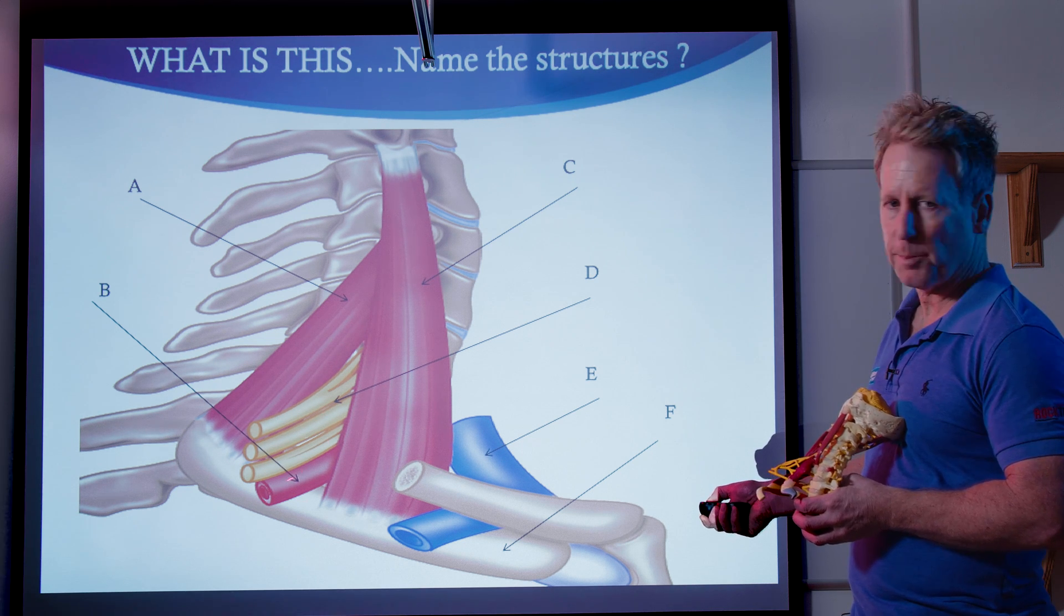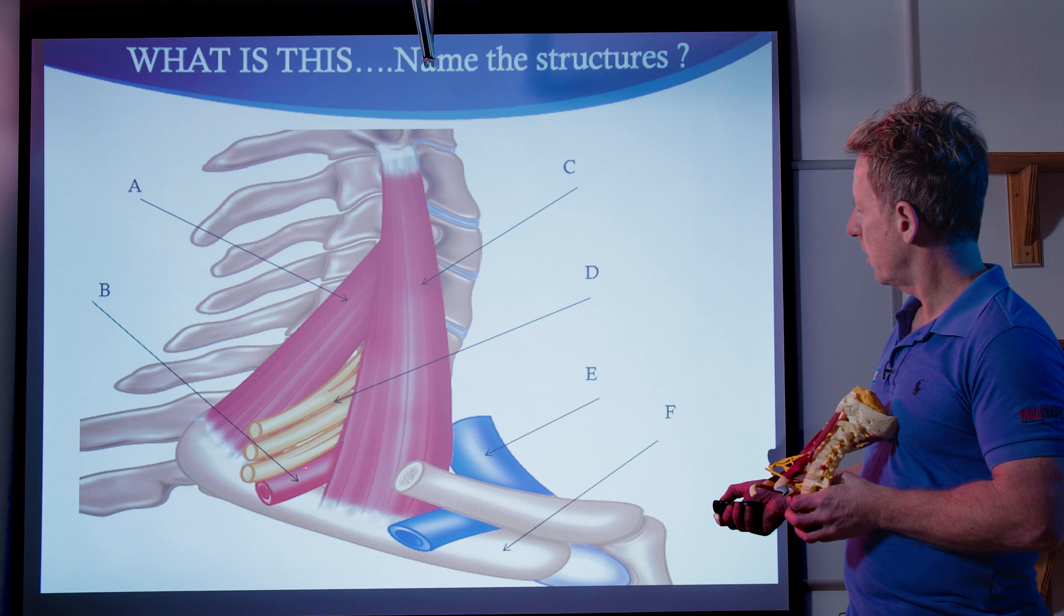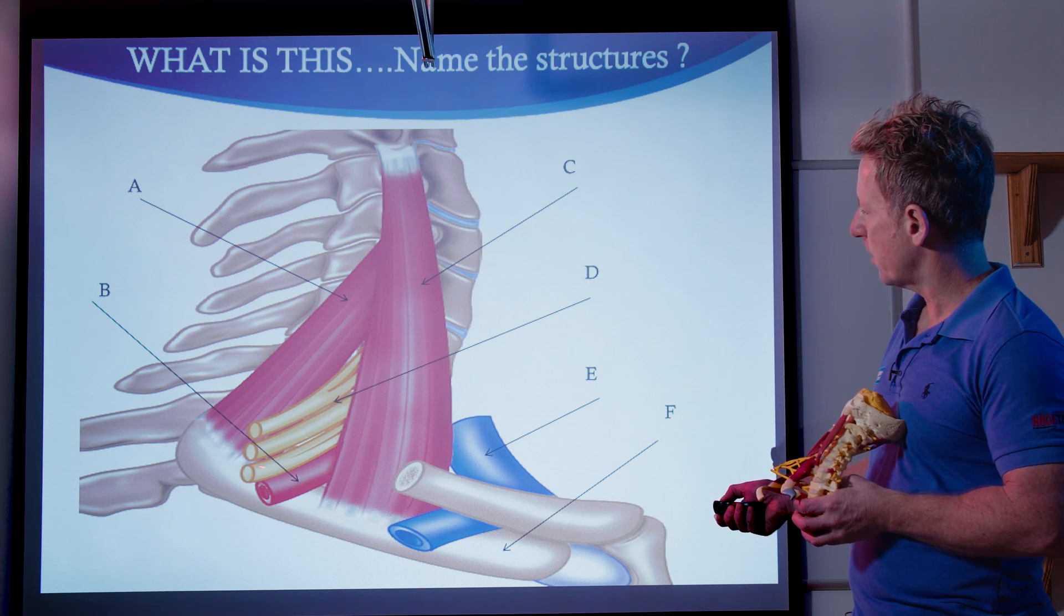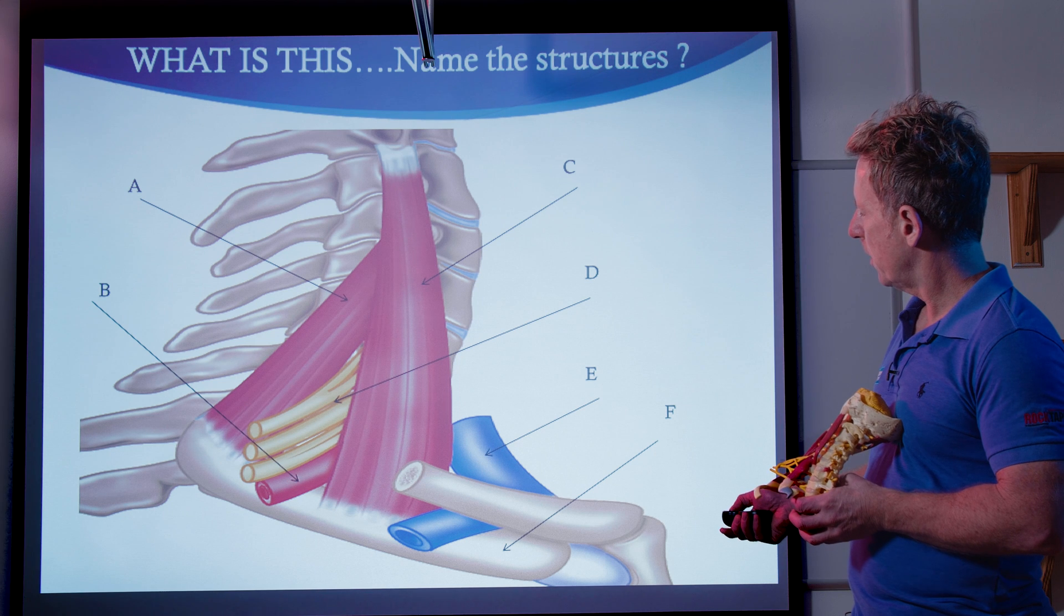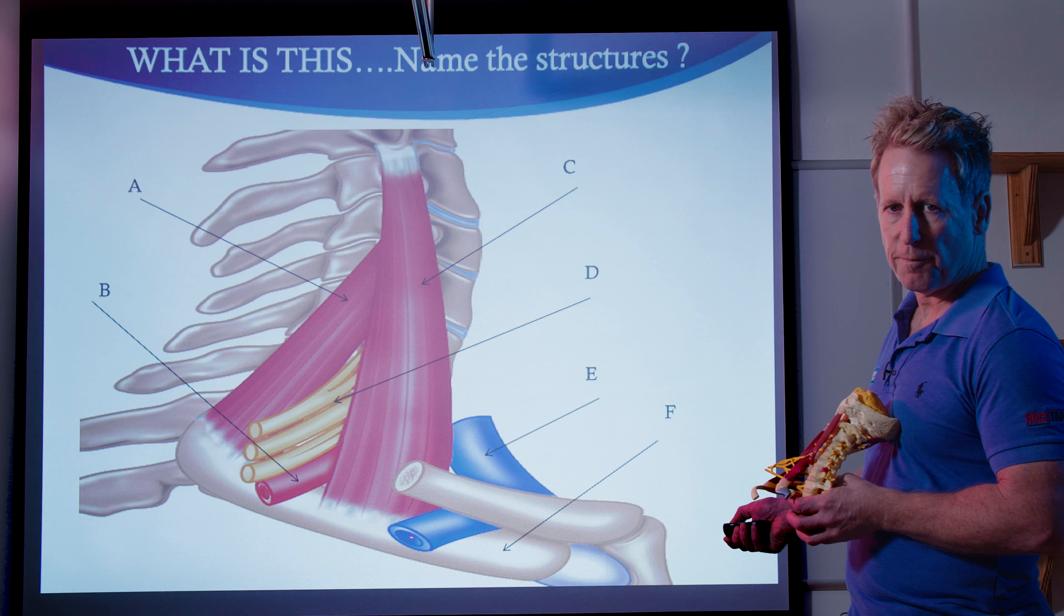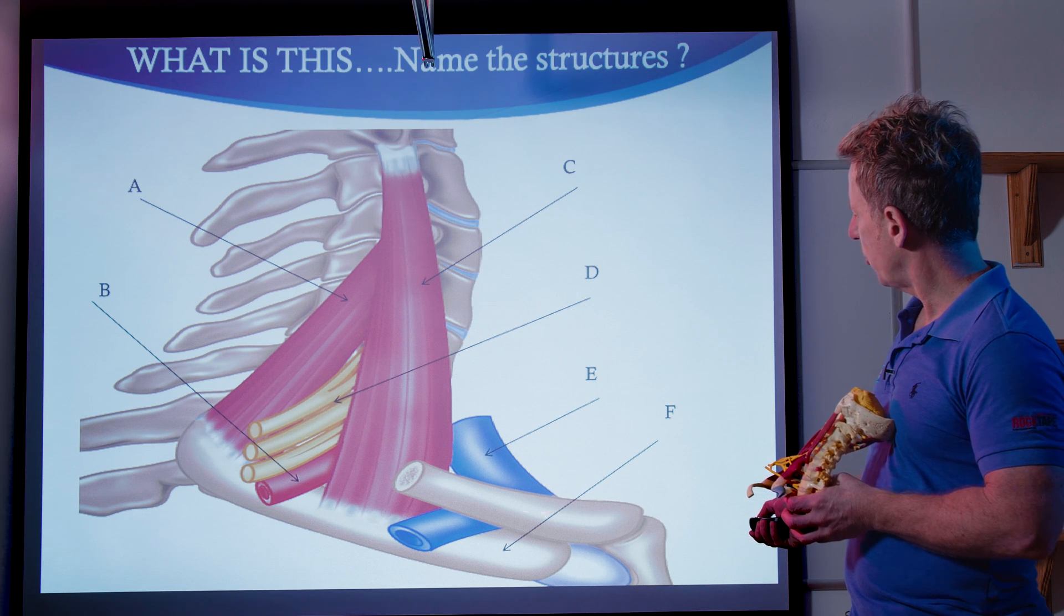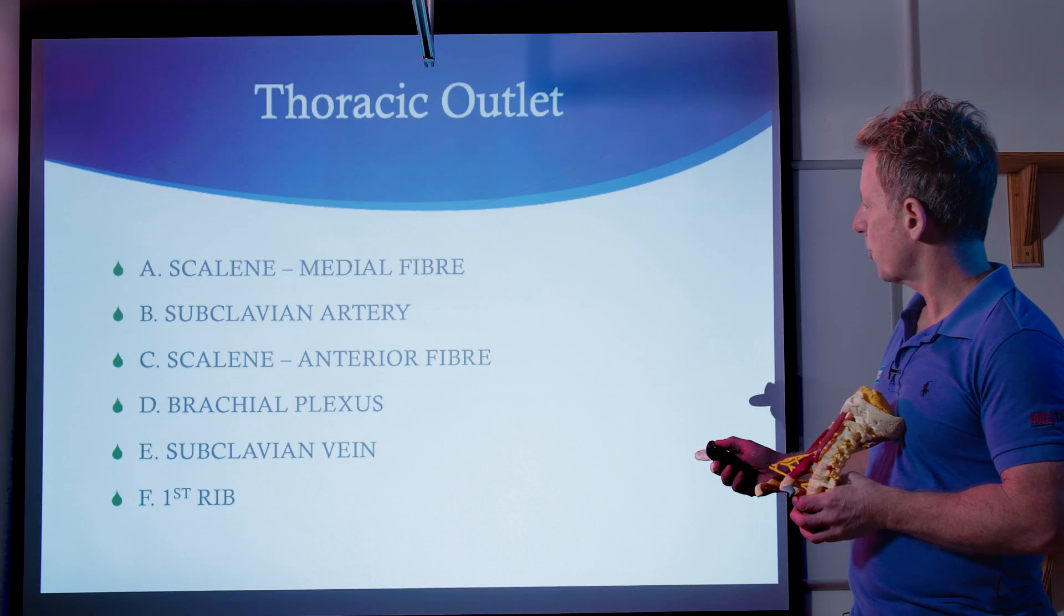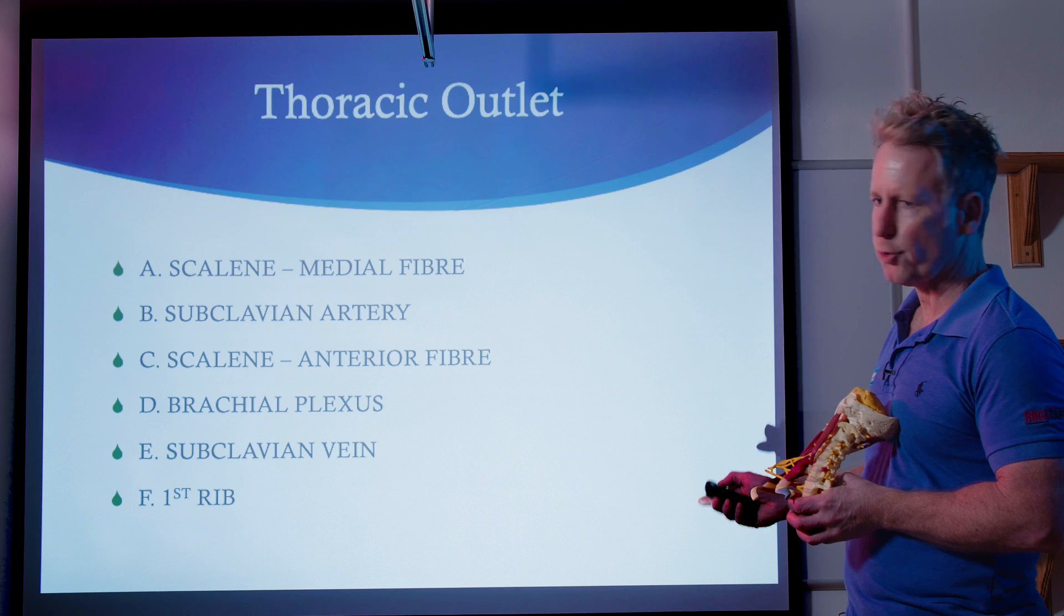And then you've got the subclavian artery that comes out, first rib, where the anterior mid fibers attach onto here. And also you've got the subclavian vein along here, and the clavicle. So these are the structures on there that I've just gone through.